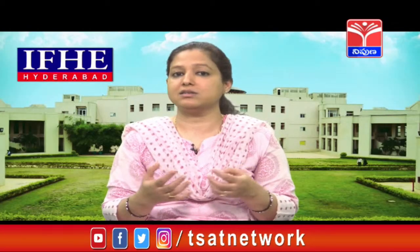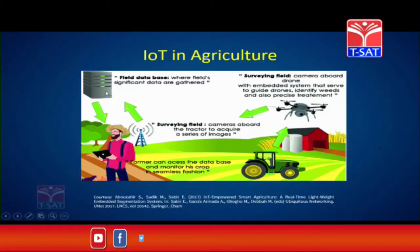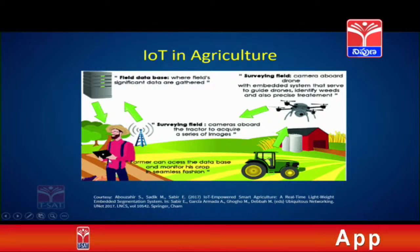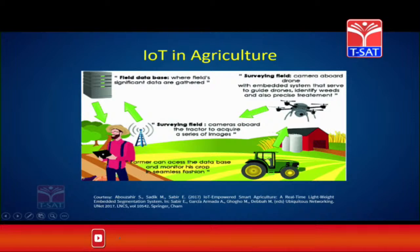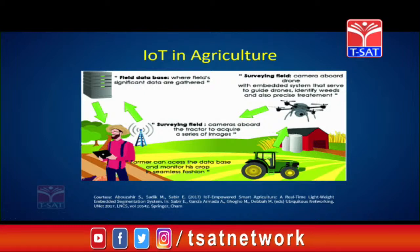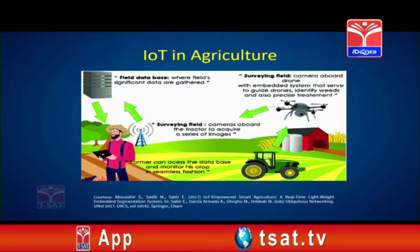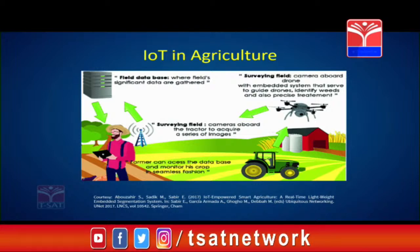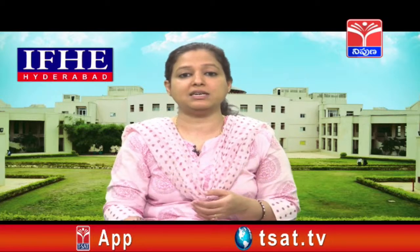For all these processes, we require a database — a server — which can store all this data. You can see a gentleman holding an iPad; he can observe all the data collected through the drones or through a sensing tower. Though he is shown standing close to the field, even if he is far away, he can still observe all this data and any activity going on in his farm from a distant location. This is how IoT can be used in agriculture.